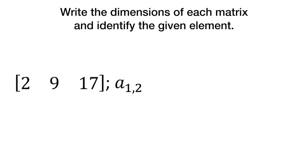So in this case, this is 1 row by 3 columns. So this would be a 1 by 3 matrix. And a 1,2 would be row 1, column 2, or 9.